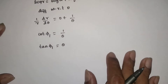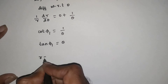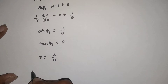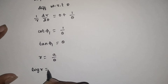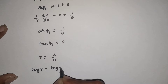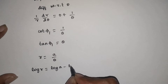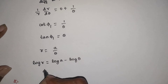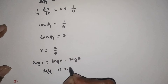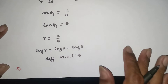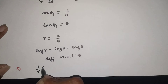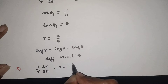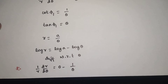Now consider r is equal to a by theta. Take log on both sides: log r is equal to log a minus log theta. Differentiate with respect to theta: 1/r times dr/dθ equals 0 minus 1/θ.